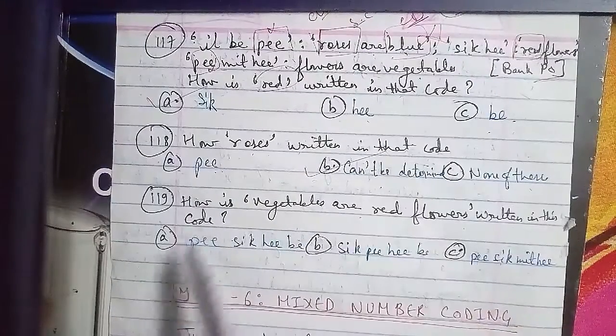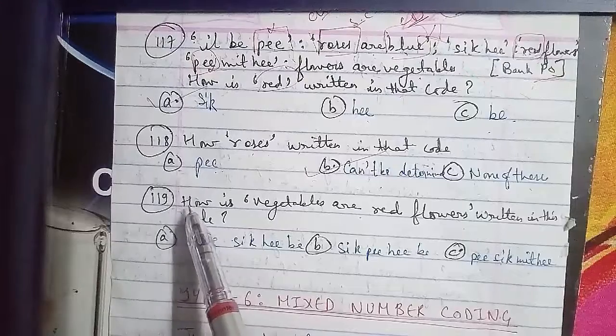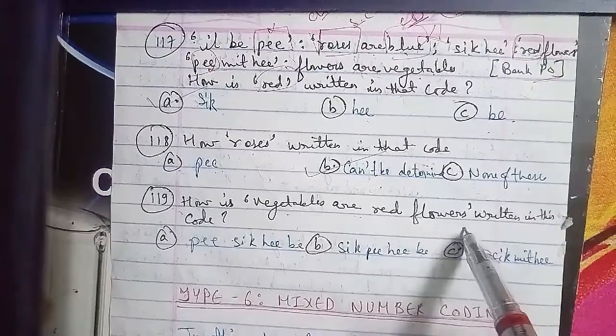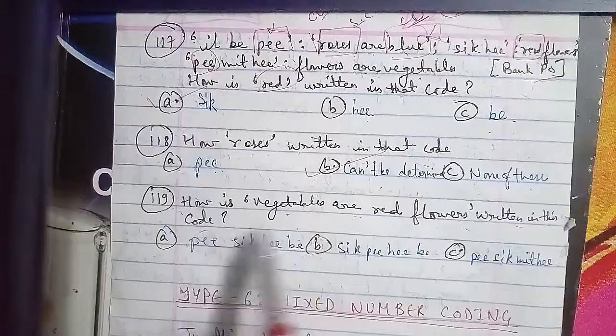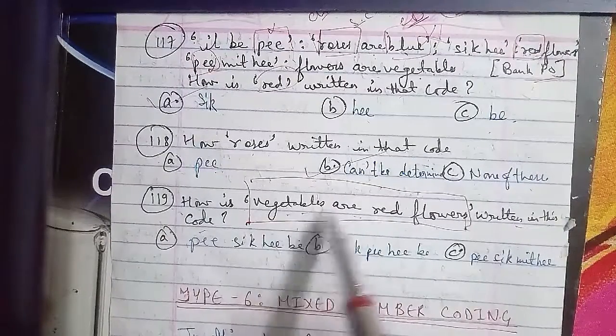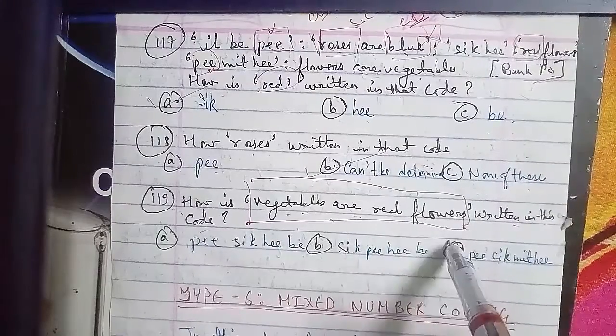How is vegetables are red flowers written in this code? We have to code this sentence now. Vegetables are red flowers. Let's code: are is coded as p, and red is sick.